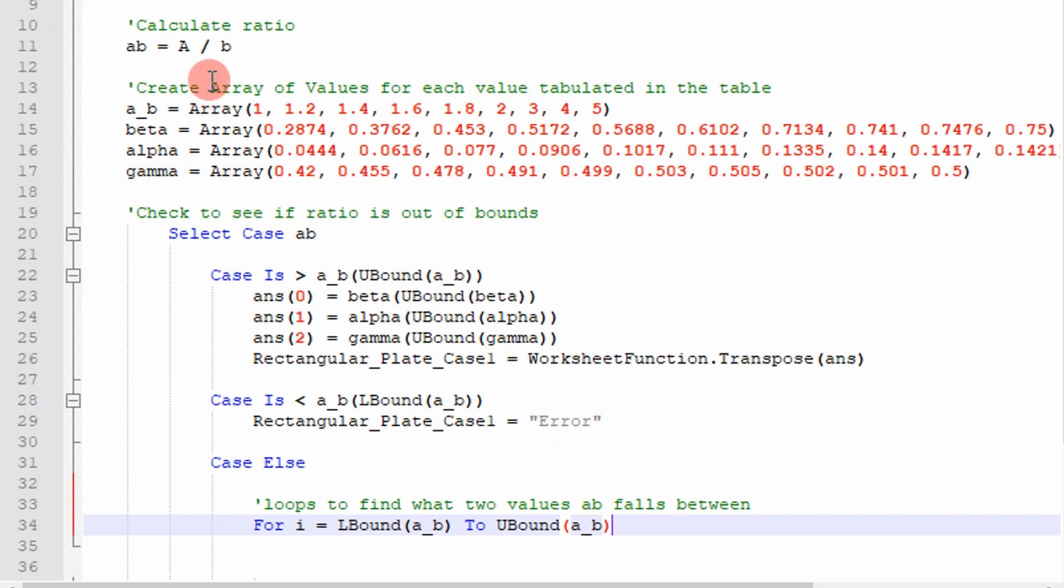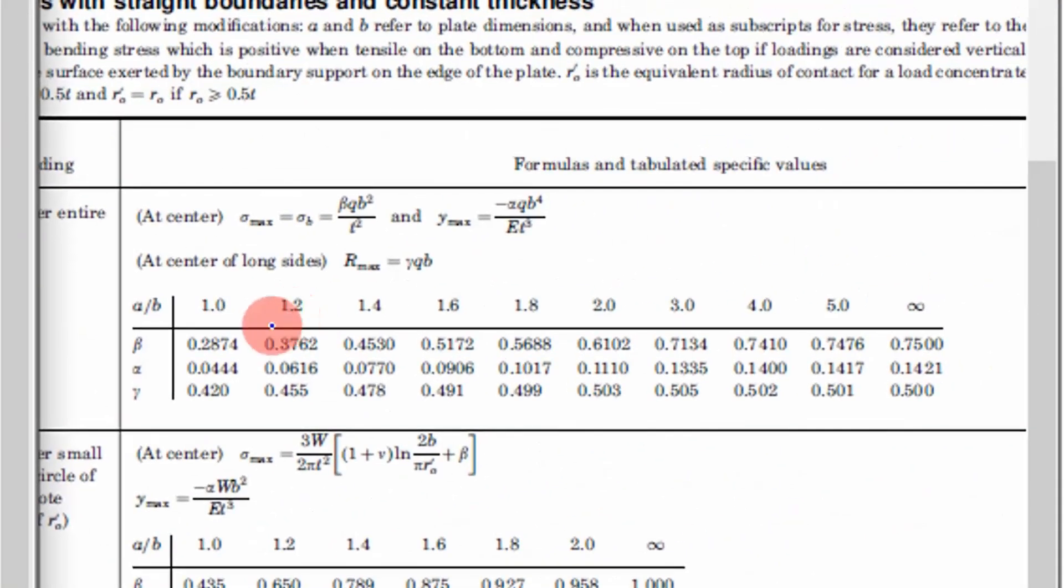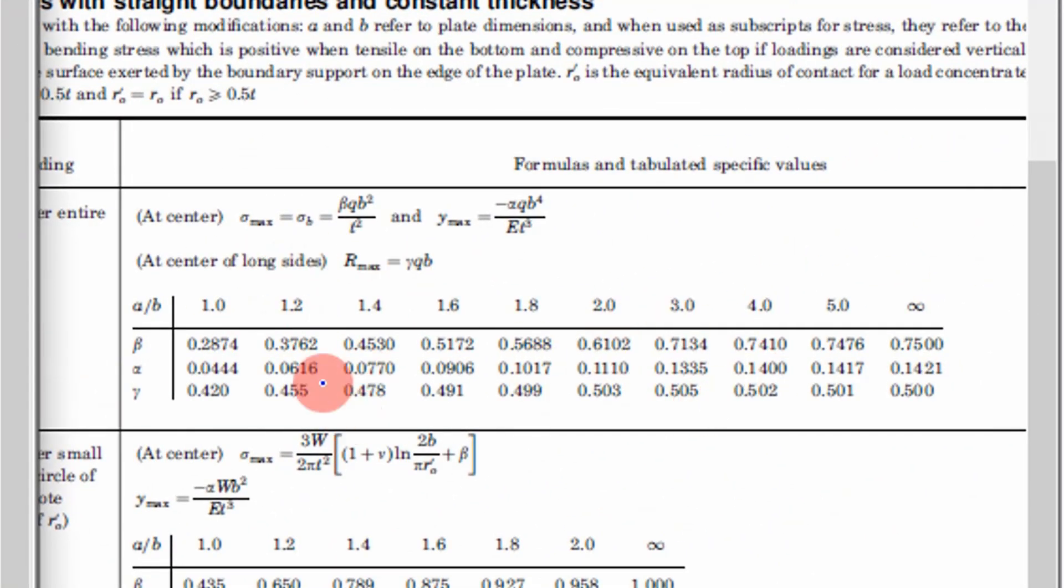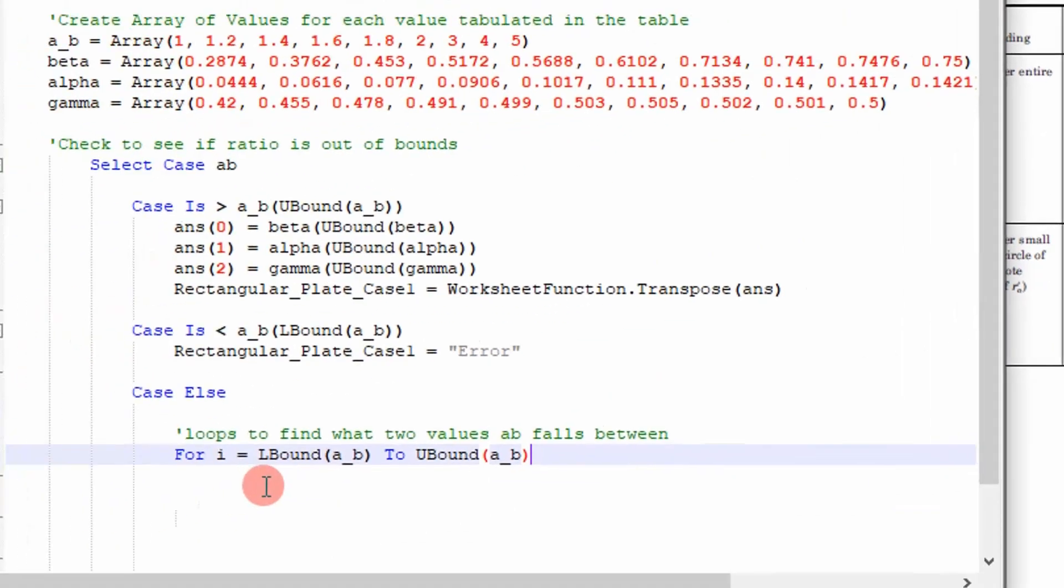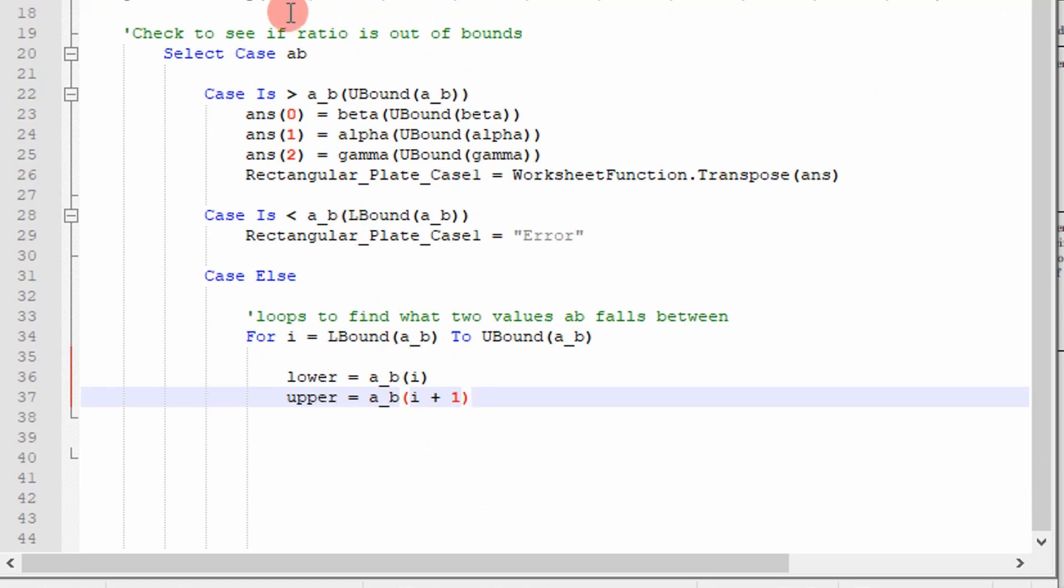Else, if a divided by b is anything else, then what I want to do is I want to go through and linearly interpolate. Find at which value a, b is between and then linearly interpolate. So that's what I'm doing here. I'm trying to find the value at which a divided by b falls between. And I'm looping through essentially the entire array list. And then so my lower value and my upper value. So those are the two values I'm going to look at to see if it falls between.